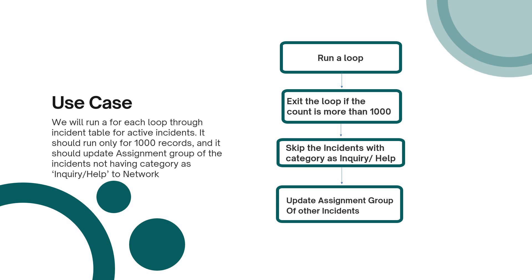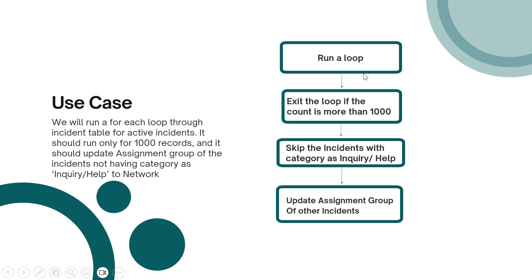In the demo we will see a use case where we run a for each loop through the incident table for active incidents. We will be filtering out the active incidents, and it should run only for 1000 records. So if the counter is more than 1000, we will completely exit the loop. We are running the loop and will exit if the counter is more than 1000 active records in the incident table.